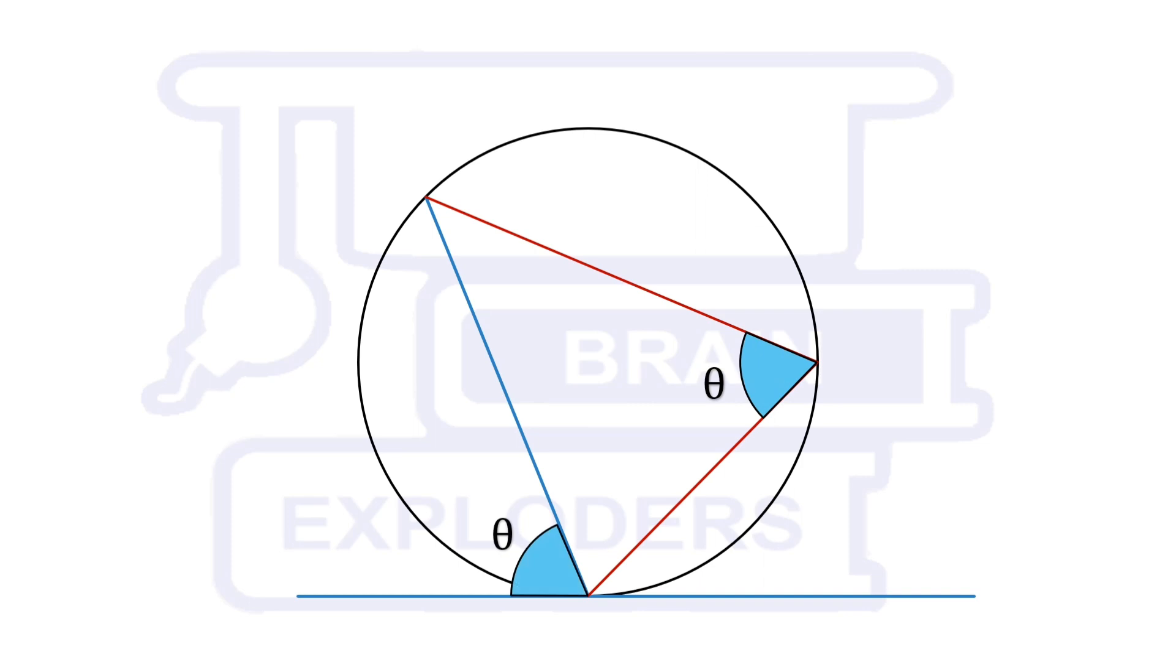If the touch point of a tangent is one of the endpoints of a chord, then the angle formed between the chord and the tangent on any one side is the same as the angle separated by the chord on any point of this circle which is on the other side of the chord.